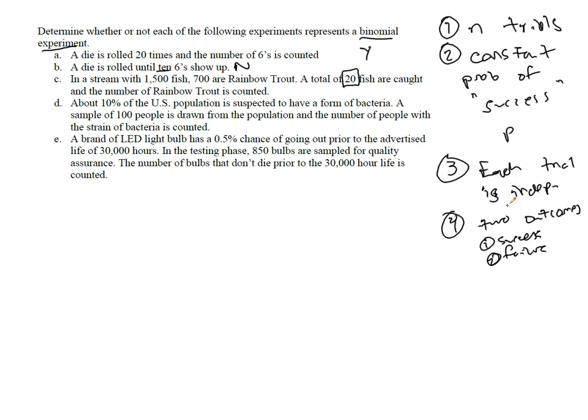Each trial is also not independent, because the number of rainbow trout depends on how many have been caught. And there is success or failure, either you do catch rainbow trout or you don't. But two assumptions are violated, and that means it's not a binomial experiment. It only takes one violation for that to happen.